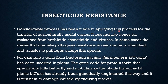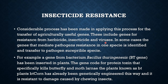Considerable progress has been made in applying genetic engineering for the transfer of agriculturally useful genes. These include genes for resistance to insecticides, herbicides, and viruses, which are added to crop plants. In some cases, a gene that mediates pathogen resistance is identified in one species and transferred to a pathogen-susceptible species.